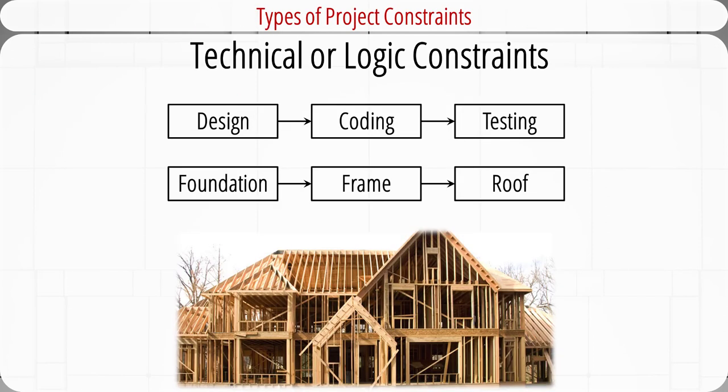There are different types of project constraints that can affect the project schedule. The first type is called technical or logic constraints. We have integrated such constraints when we build a project network. They are related to the networked sequence in which project activities must occur.